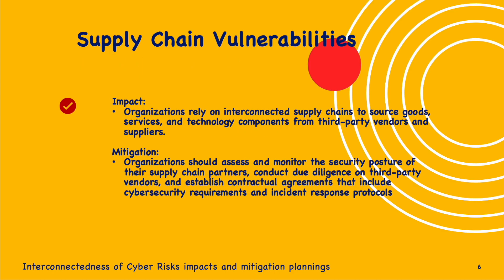Next is supply chain vulnerabilities. Organizations rely on interconnected supply chains to source services and technology components from third-party vendors and suppliers. However, supply chain vulnerabilities such as software supply chain attacks and vendor security breaches can expose organizations to significant cyber risk. For mitigation, organizations should assess and monitor the security posture of supply chain partners, conduct due diligence on third-party vendors, and establish contractual agreements that include cybersecurity requirements and incident response protocols. Implementing vendor risk management programs and threat intelligence sharing can help mitigate supply chain vulnerabilities and enhance overall cyber resilience.